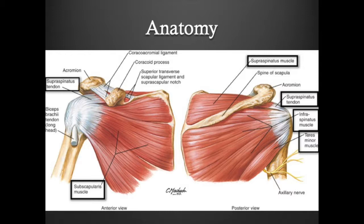The subscapularis muscle is in the anterior aspect of the shoulder and helps to provide anterior stability to the shoulder. The infraspinatus and teres minor muscles run on the posterior aspect of the shoulder and aid in external rotation.